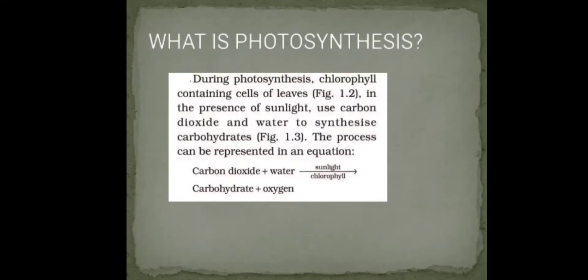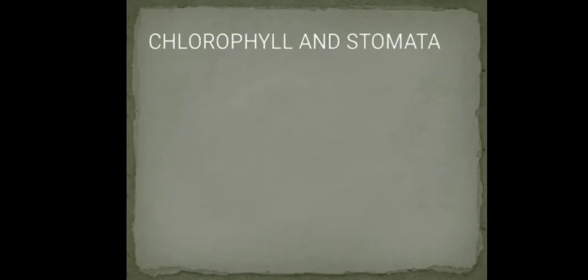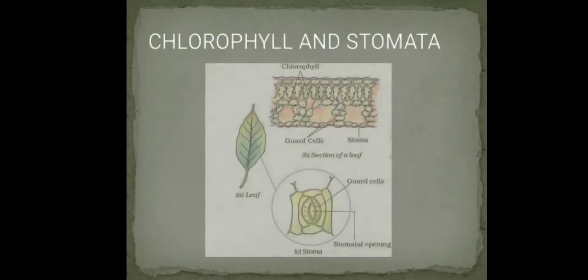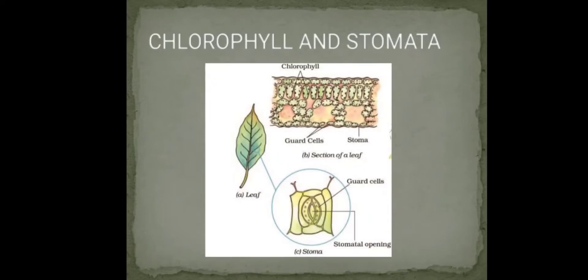During photosynthesis, chlorophyll-containing cells of the leaves use carbon dioxide and water in the presence of sunlight to synthesize carbohydrates. The process is represented by the equation: carbon dioxide plus water, in the presence of sunlight and chlorophyll, forms carbohydrate and oxygen. In a cross-section of the leaf, the green structures are the chlorophyll, and the stomata are the openings surrounded by guard cells.